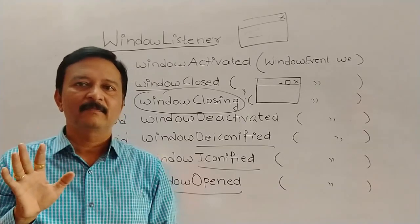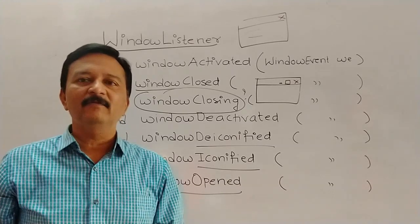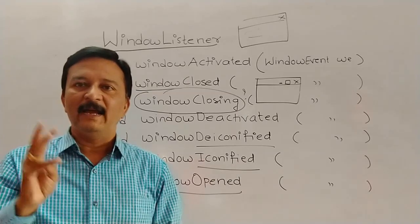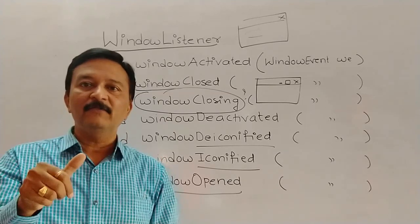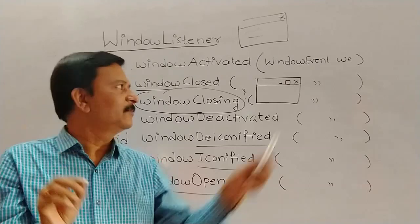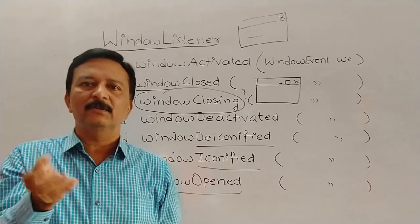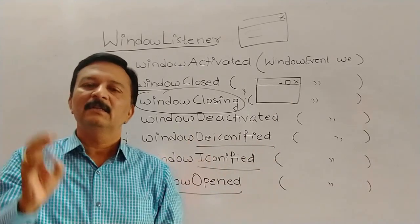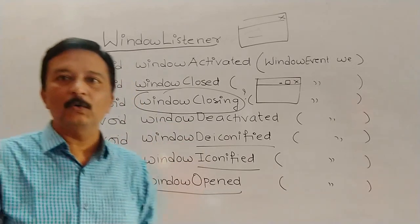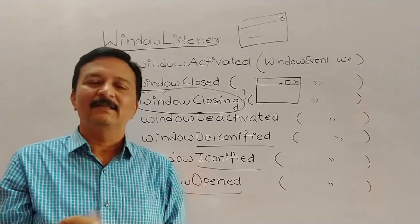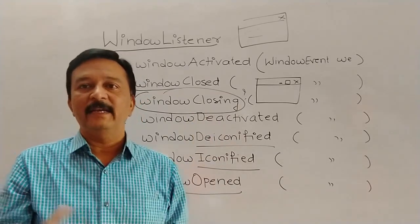So in a GUI application, all these window events can be managed easily. To summarize the WindowListener interface terms: activated, deactivated, closed, opened, iconified, and deiconified. Iconified means the window is minimized to a small icon. This covers all the concepts of the WindowListener interface. The next interface we will study is called the KeyListener interface.